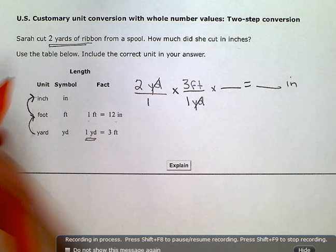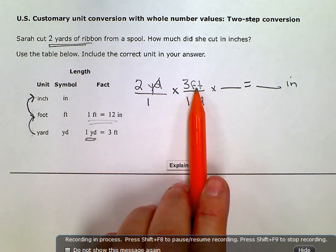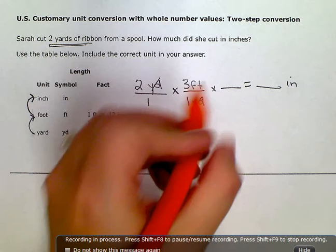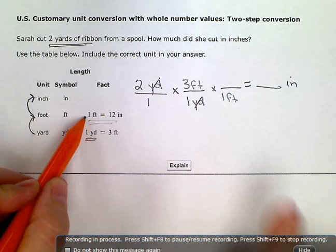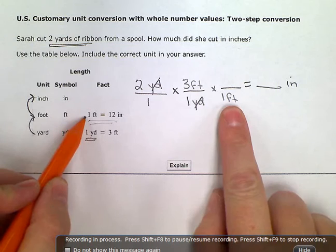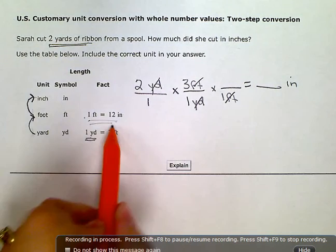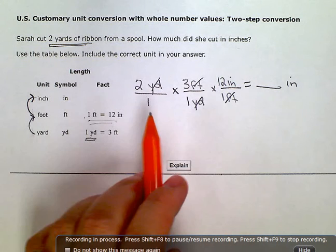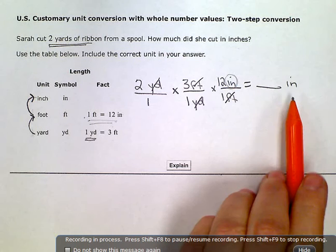So now I'm going to use this conversion statement. Since I have feet in the numerator, but I don't want to stay with feet as my final unit, I'm going to put one foot here or this number in the denominator so that these units will cancel and the 12 inches goes up top. Now all the units have canceled out except inches, which is where I want to be.